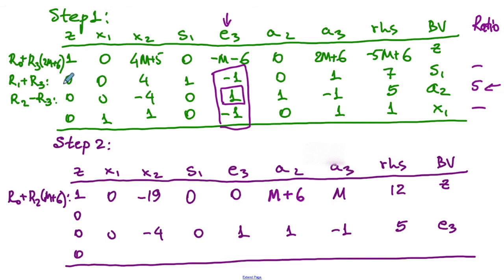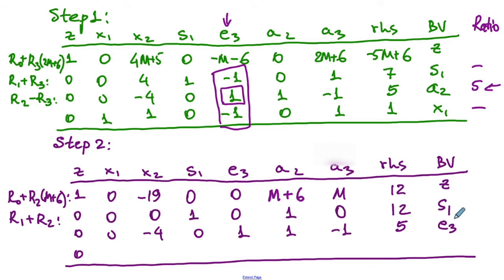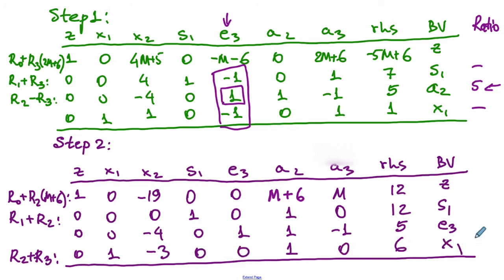To update row one, we add row two to row one and replace row one with the result. To compute the new row three, we add row two to row three and replace the previous row three with the result. This completes all step two computations and we obtain the step two tableau.